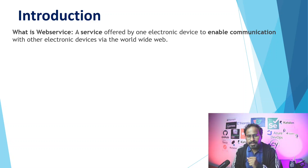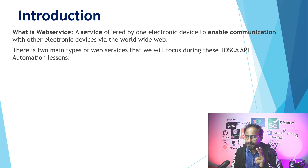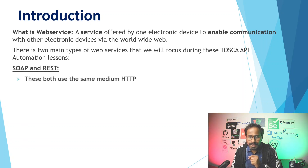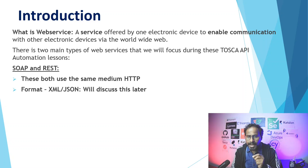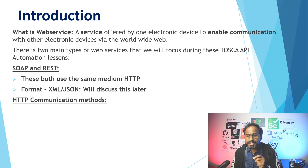What is a web service? A web service is a service offered by one electronic device to enable communication with another electronic device via the World Wide Web. There are two main types of web services we will focus on during these Tosca API automation lessons: the first is SOAP and the second is REST. Both use the same medium — the HTTP method. For SOAP we use XML format, and for REST we use JSON format. We will discuss these formats in later sessions, and the communication method both services use is HTTP.